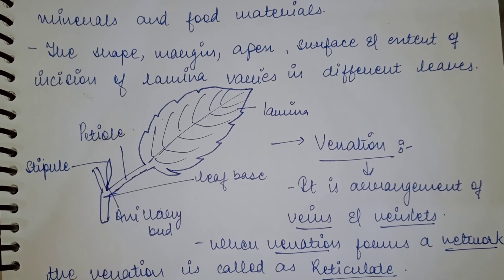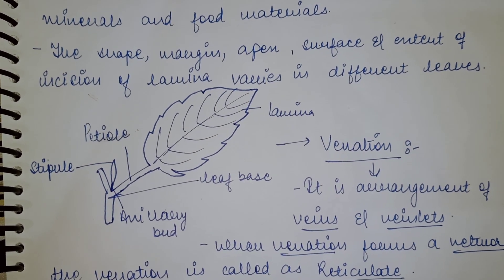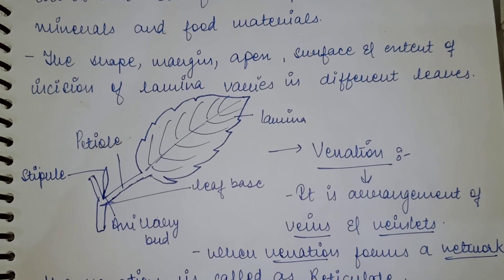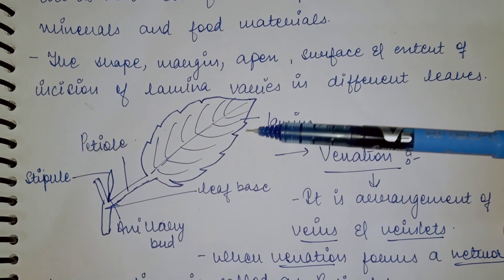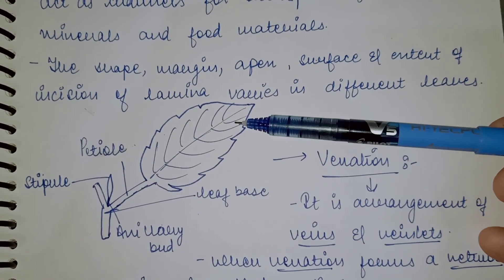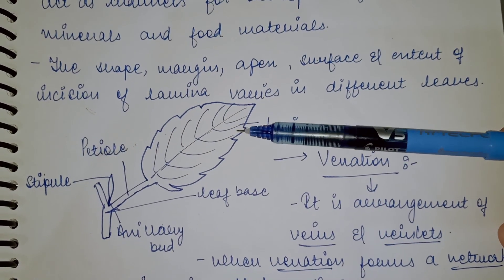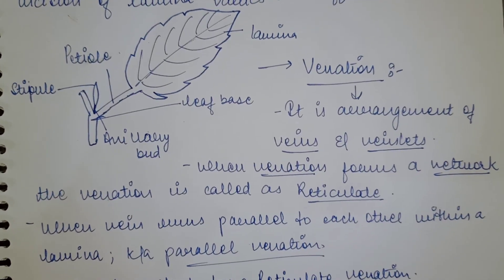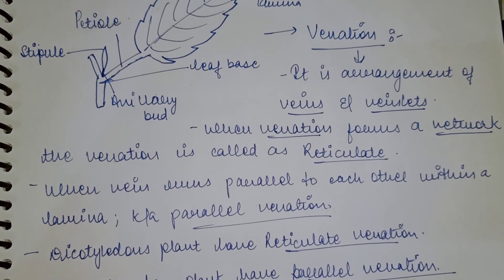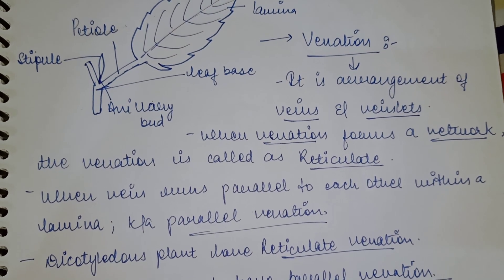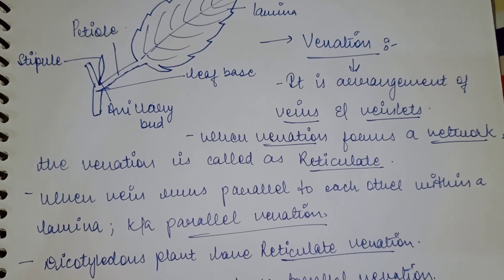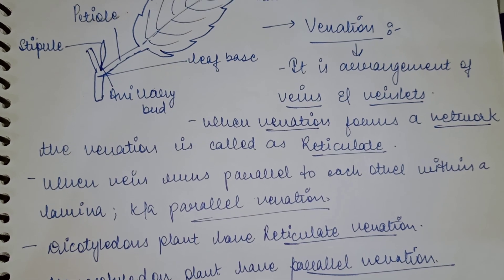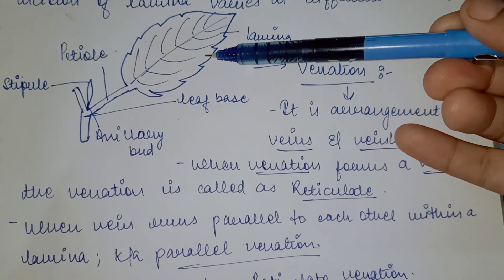The shape, margin, apex, surface, and extent of incision of the lamina varies in different leaves. The lamina represents the complete shape of a leaf and differs depending on the plant variety and species. Venation refers to the arrangement of veins and veinlets in a particular leaf, basically the veins present in the lamina region.